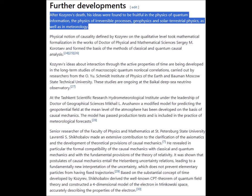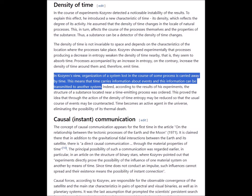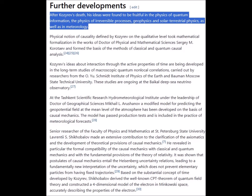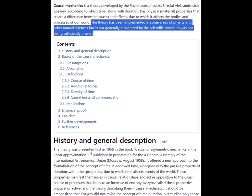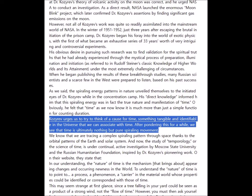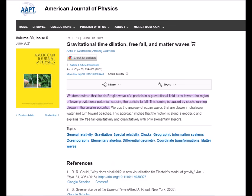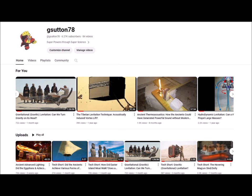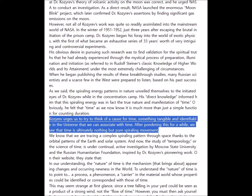After Kozyrev's death, his ideas were found to be fruitful in the physics of quantum information, the physics of irreversible processes, geophysics and solar-terrestrial physics, as well as meteorology. But curiously, it's not generally considered a sufficiently proven theory by the mainstream scientific community. Kozyrev believed that time itself was the source of gravity, a concept that mirrors an aspect of the modern theory of gravity as being due to time dilation, as discussed in my video 'Gravitational or Gravitic Levitation'.